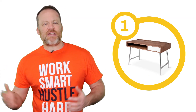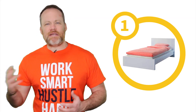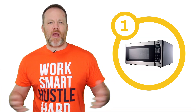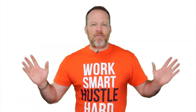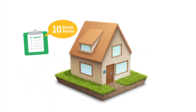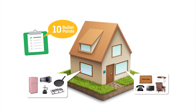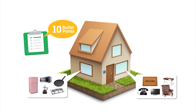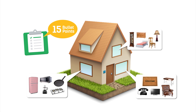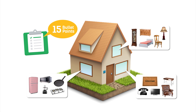Number one might be a desk, a bed, a TV, a refrigerator, a stove, or a microwave. Number five pieces of furniture in that room, then go to the next room and number five pieces of furniture in that room. If you have ten points in your speech, you're going to need to memorize ten pieces of furniture. If you have fifteen points, you're going to need to memorize fifteen pieces of furniture.